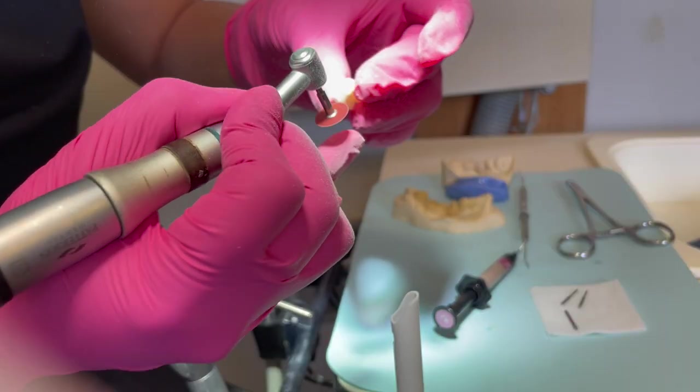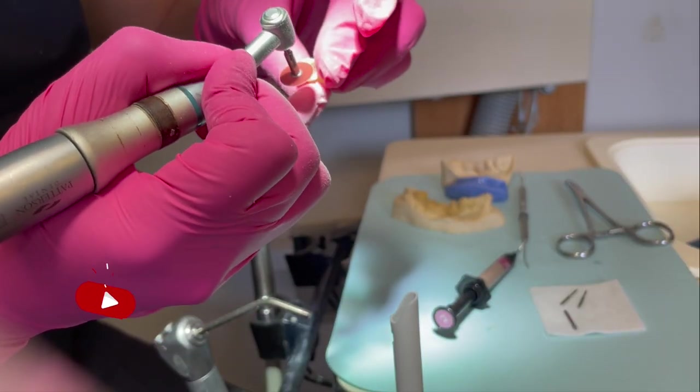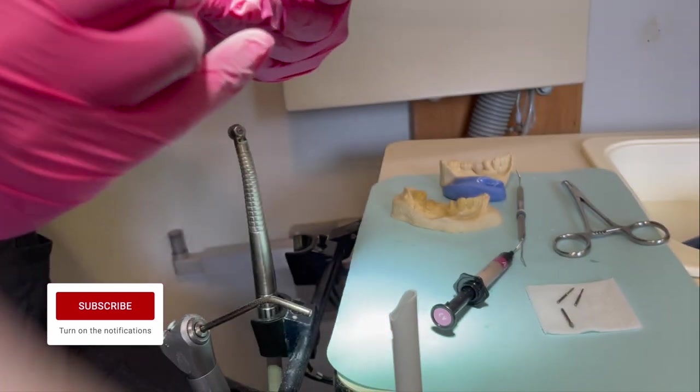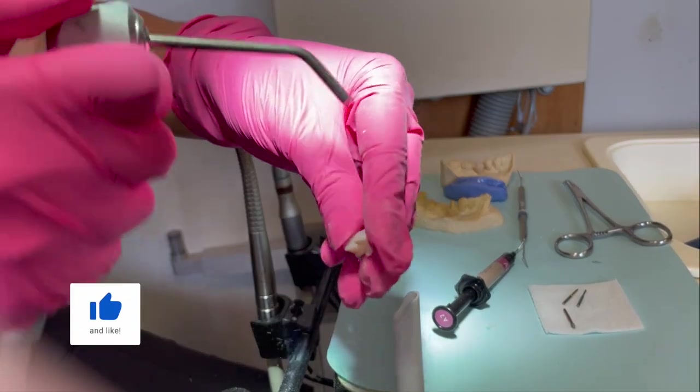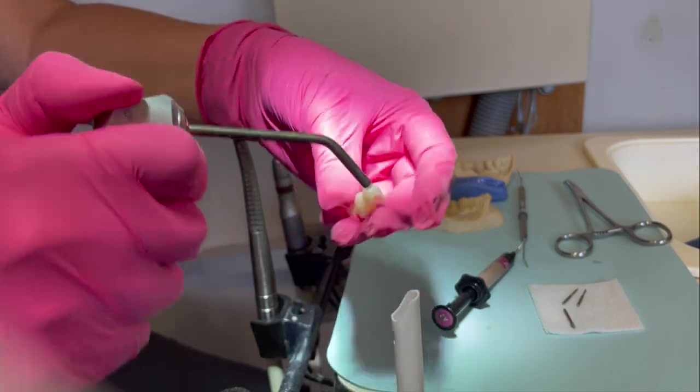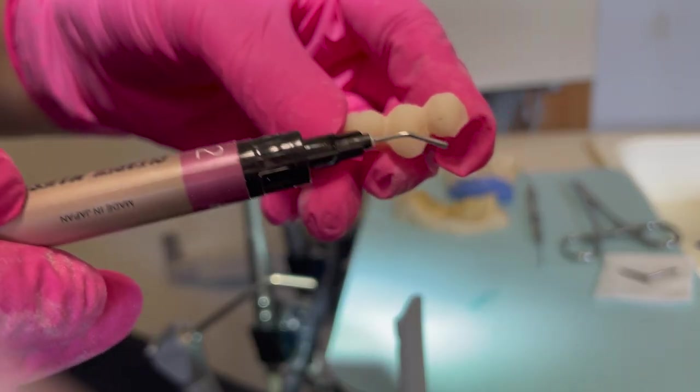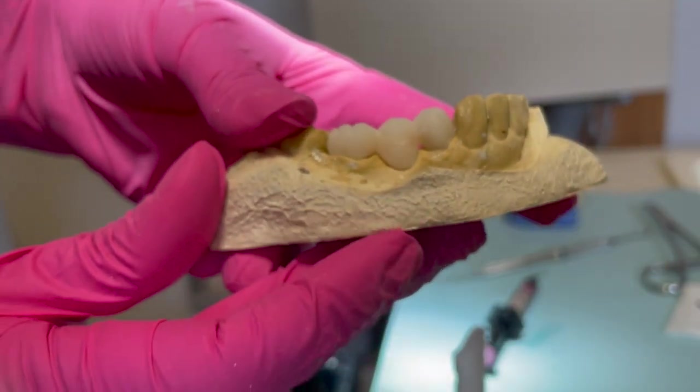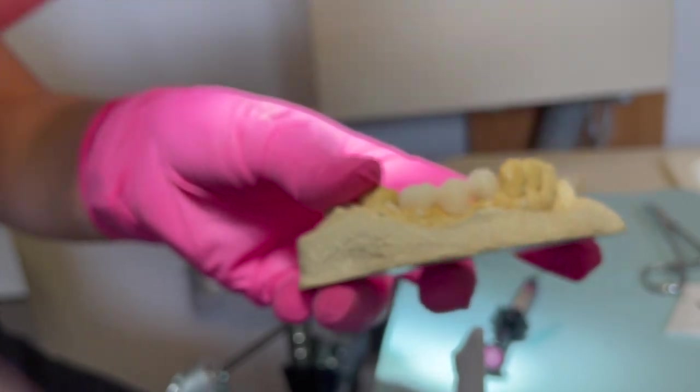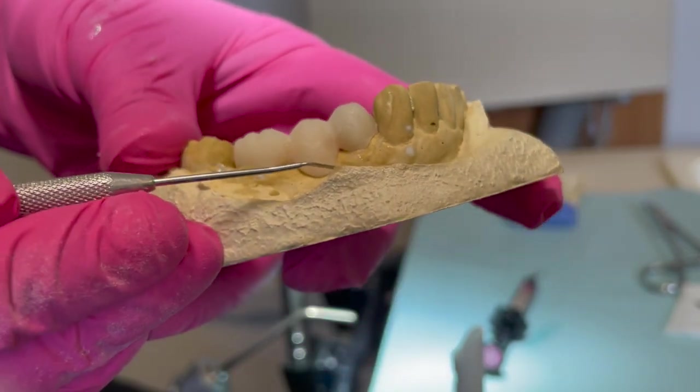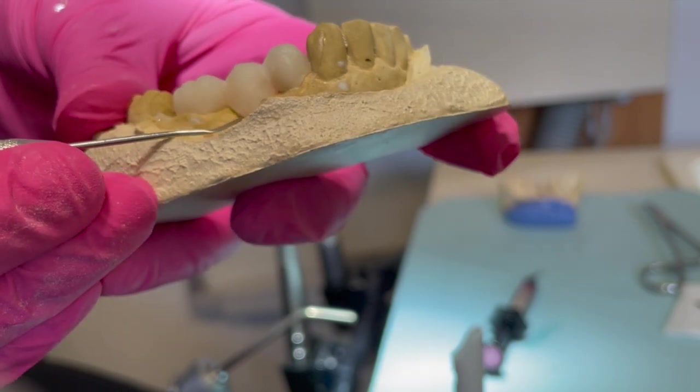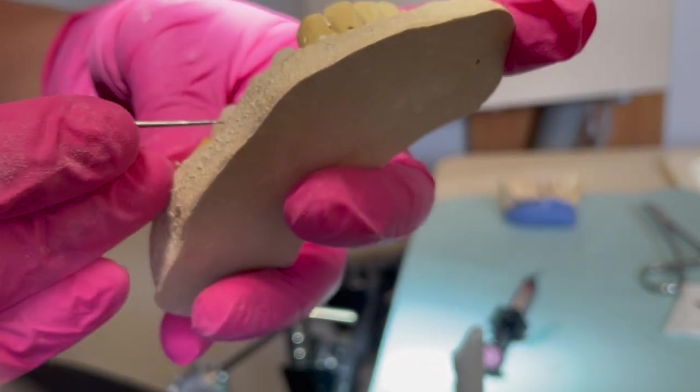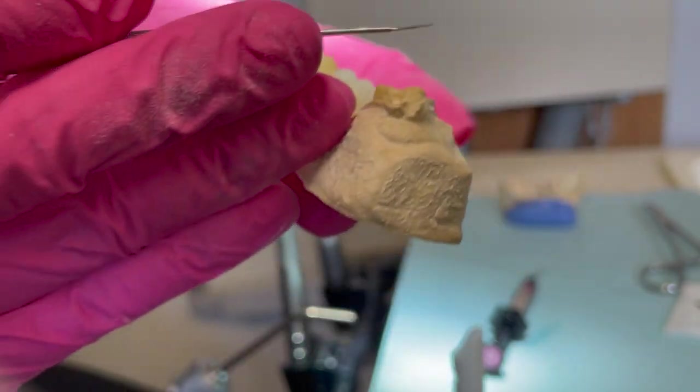I really like using discs because they're flexible and very helpful when you want to contour things. I'm blowing some air to remove some of the dust. Something that is very important to look at when you're fabricating your temporary bridge are the embrasure spaces, because they need to be wide enough so that the gums have space to fill in the area nicely, but not too wide that there's gonna be a food trapping issue.